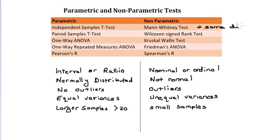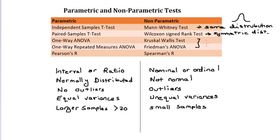For example, the Mann-Whitney test requires you to have the same distribution between the two samples — both samples might fit a normal distribution or a t-distribution. For the Wilcoxon signed-rank test, both distributions have to be symmetrical. Kruskal-Wallis and Friedman's require the same distribution and equal variances.